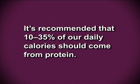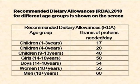The protein recommendations: it is recommended that 10 to 35 percent of our daily calories should come from proteins. The Recommended Dietary Allowance (RDA) 2010 for different age groups is as shown on the screen. Children aged 1 to 3 years need 17 grams of protein per day; children aged 4 to 8 years require 20 grams per day; children aged 9 to 13 years require 14 grams per day; girls aged 14 to 18 years require 15 grams; boys aged 14 to 18 years require 54 grams per day; women aged 18 and above require 55 grams per day; and men aged 18 and above require 60 grams of protein per day.